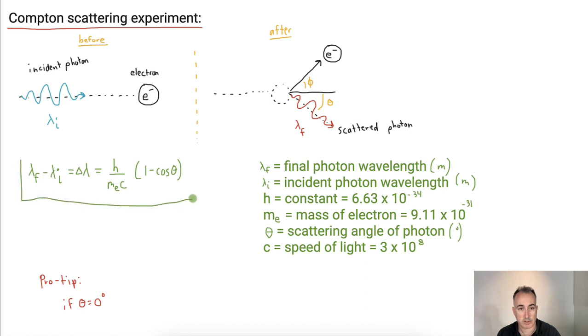It's going to equal h over m_e times c, all that times 1 minus cosine of theta. So this is your equation you need to be able to use. h is Planck's constant, 6.63 times 10 to the minus 34 joules seconds. m_e is the mass of the electron, 9.11 times 10 to the minus 31 kilograms. Theta is the scattering angle of your photon in degrees. And c is the speed of light, 3 times 10 to the 8 meters per second.